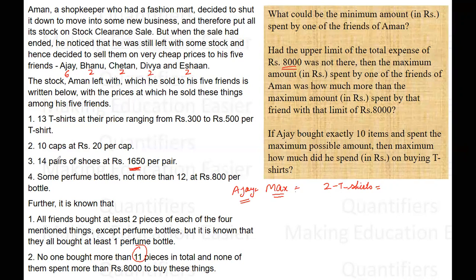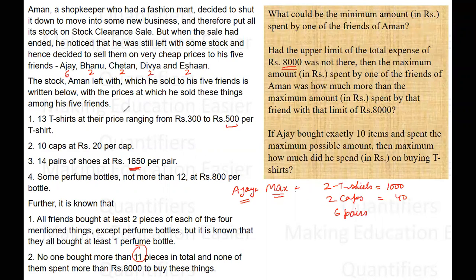We are maximizing the number of pairs of shoes. And if still the number 11 is not reached, then we will increase the number of perfume bottles. We will not increase the number of T-shirts because they cost less than the perfume bottles. So two T-shirts at the maximum price of 500 rupees each will cost him 1000 rupees. Two caps cost him 40 rupees. Six pairs of shoes at 1650 each gives 9900 rupees.